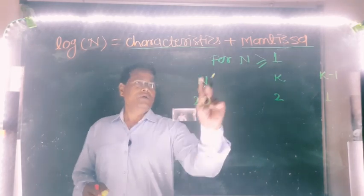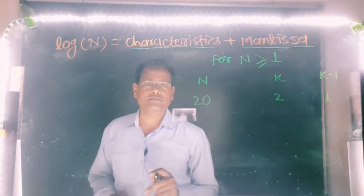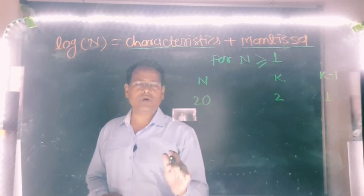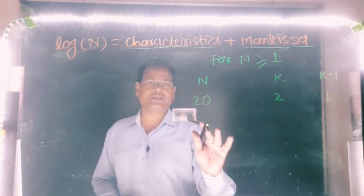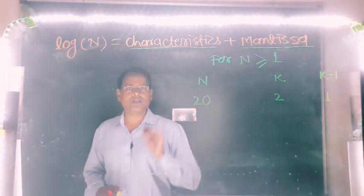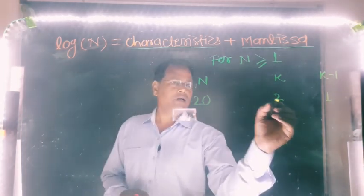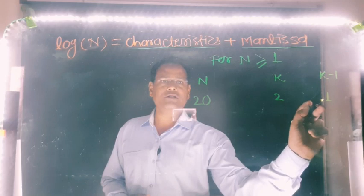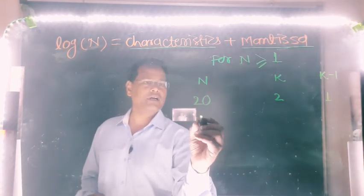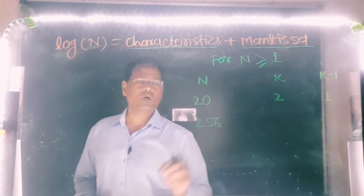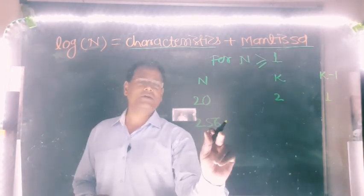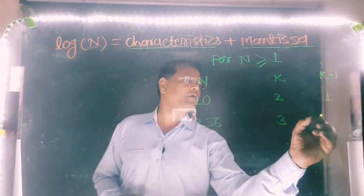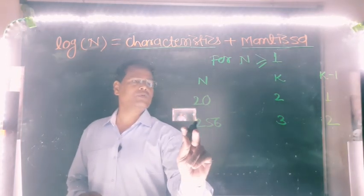For a number greater than or equal to 1, the decimal point is after that number. First count the number of digits in the given number, call that number of digits k, and subtract 1 from k — that will be the characteristics. Here is a second example: if the number is 256, how many digits are there? 1, 2, 3. So k is 3. We subtract 1, giving 2. So the characteristics of 256 is 2.